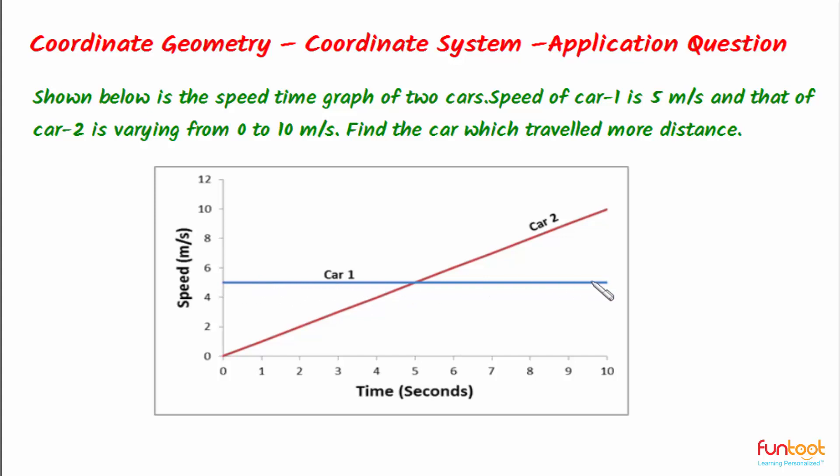So, in this graph, it is not the distance which is constant, it is the speed of the car which is constant. Let's take the graph of the car 1 represented by blue line first.